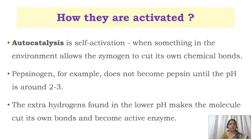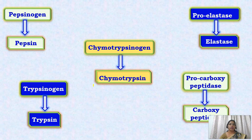One important process for zymogen activation is autocatalysis, which is self-activation. When something in the environment allows a zymogen to cut its own chemical bonds, it is called autocatalysis. The best example is pepsinogen: when the pH reaches 2 to 3 in highly acidic conditions, pepsinogen automatically converts into pepsin. The excess hydrogen ions at low pH make the molecule cut its own bonds, thereby becoming active.